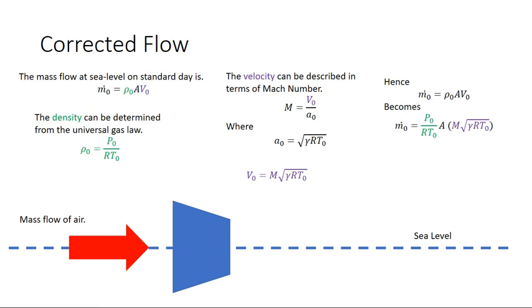And we have an equation for the mass flow at sea level. Now this equation can be simply modified for any altitude. So if we go up to some altitude, instead of the pressure at sea level it would be the pressure at the altitude, instead of the temperature at sea level it would be the temperature at the altitude.